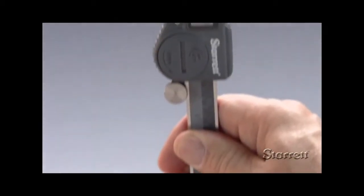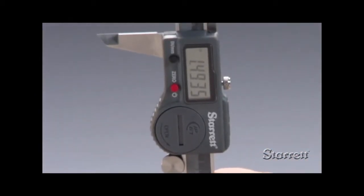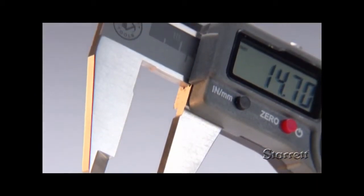The 798 is a full-featured electronic tool with an easy-to-read display, inch-millimeter conversion, and zero set at any position.